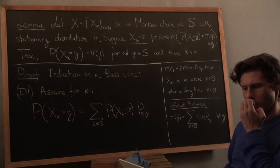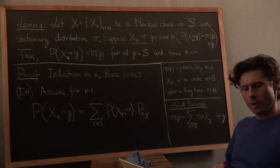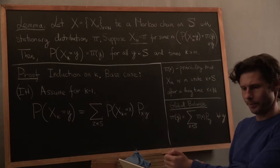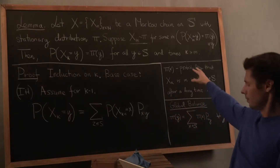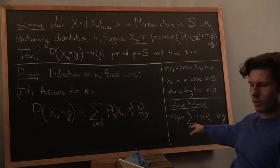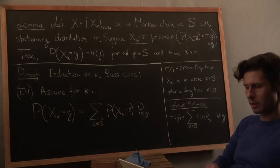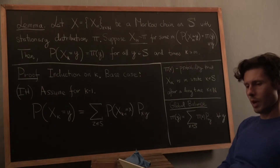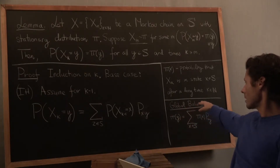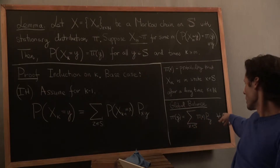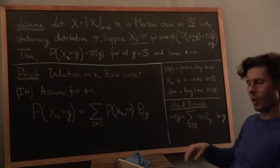We're going to try to develop some intuition for stationary distributions. What does that mean? We're essentially trying to reconcile the mathematical definition, which is in terms of the global balance equations. It says that if you have a stationary distribution pi, first it's a distribution — values between 0 and 1, and the sum of entries is 1. And then more importantly, it satisfies the global balance equations for all y with respect to the one-step transition probabilities of the chain.